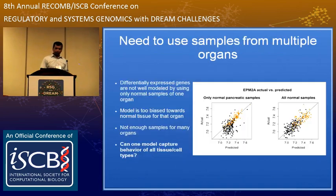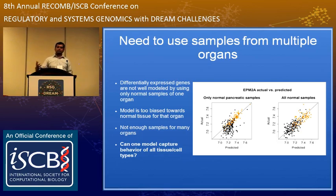Now I hit the first roadblock: you cannot use normal samples from just one organ. The idea is to use normal samples from all kinds of datasets, create a model, and then predict the expression of a perturbed sample — which could be a disease sample, siRNA, or drug treatment. I'm trying to find out how much of the genes' behavior is captured by the normal network and how much is unexplained.